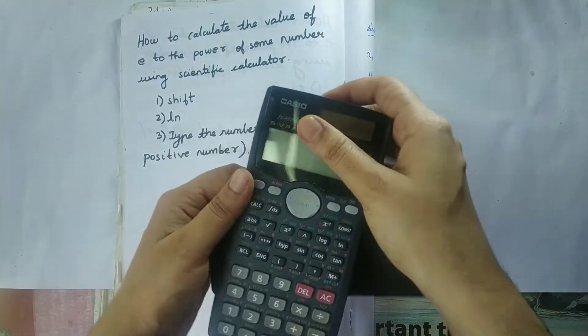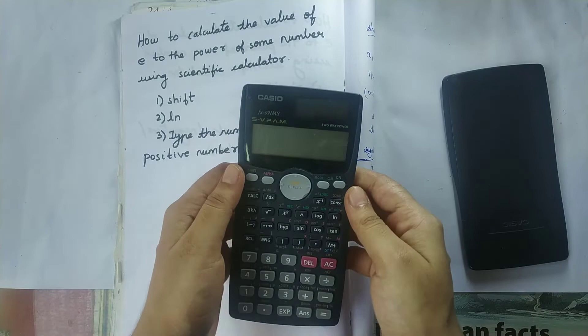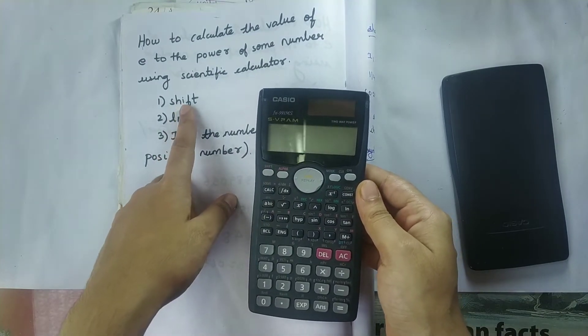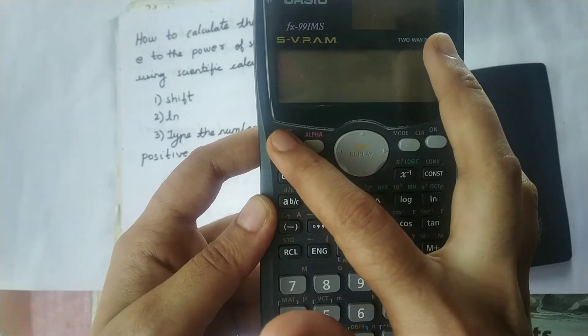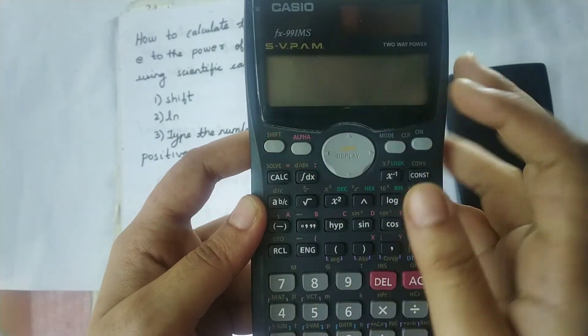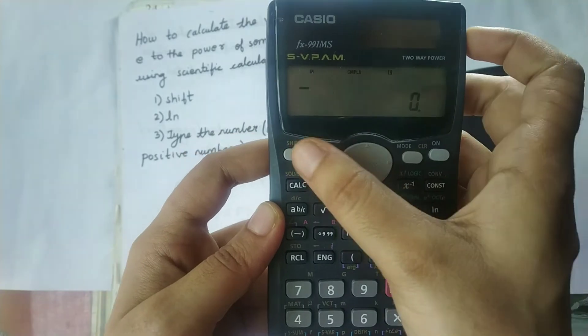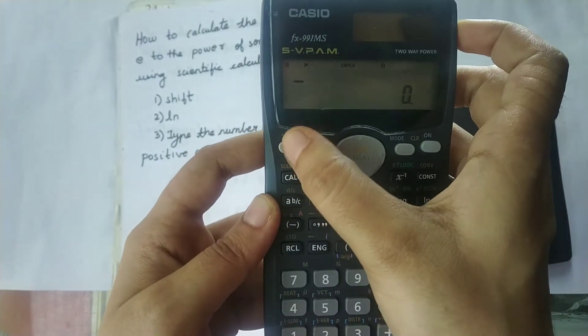So the first step is we need to press the shift button. So this is the shift button. I need to press that first. First, I need to turn on the calculator, then I need to press the shift button.